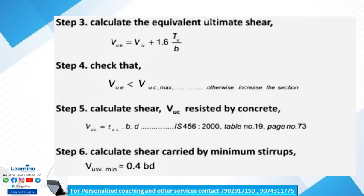The equivalent shear Ve is calculated as: Ve = Vu + 1.6 × Tu / b, where Vu is the actual shear force, Tu is the actual torsional moment, and b is the breadth of the beam. We then check that Ve is less than the maximum shear capacity Vc max.